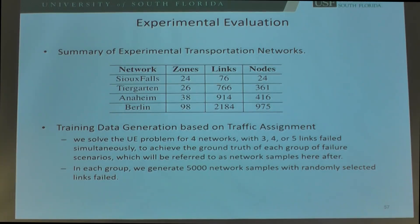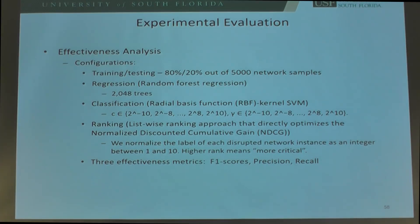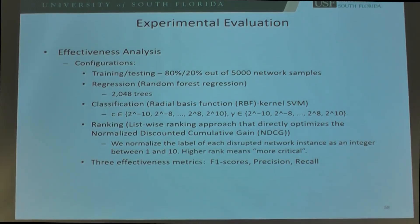We separate the 5,000 samples into 80% training and 20% testing datasets. We train the model for regression, classification, and ranking, and then use the testing dataset — assuming we don't have ground truth — to predict whether each combination is critical, then compare with ground truth to evaluate performance. We have three effectiveness metrics: F1 score, precision, and recall. Precision and recall focus on different aspects balancing true positives, false positives, and false negatives. F1 score is a combination of precision and recall — only when both are high and balanced do we achieve a better F1 score.